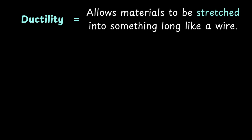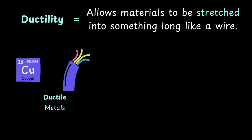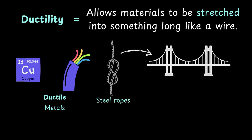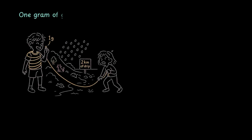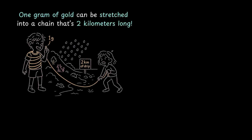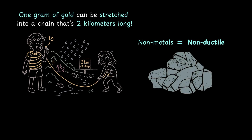Moving on, let's talk about ductility. Ductility is the property that helps materials stretch into something long and thin like a wire or a chain. Metals are ductile too – that's why copper can be made into wires, ropes can be made of steel for use in cranes and bridges, and gold and silver can be made into chains. In fact, one gram of gold can be stretched into a chain that's two kilometers long! Non-metals, on the other hand, are not ductile. Try making wires out of coal – at best, you'll end up with some chunks to add a smoky flavor to your paneer tikka.